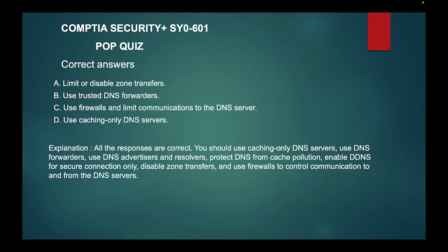The answers are all of them — A, B, C, and D. All responses are correct. You should use caching-only DNS servers, use DNS forwarders, use DNS advertisers and resolvers, protect DNS from cache pollution, enable DNS for secure connections only, disable zone transfers, and use firewalls to control communication to and from the DNS servers.